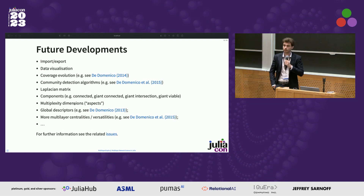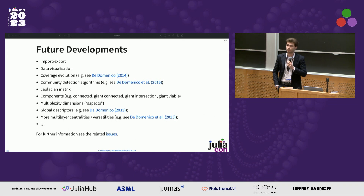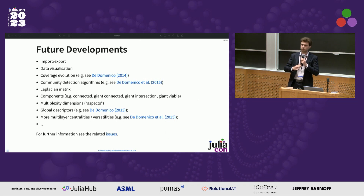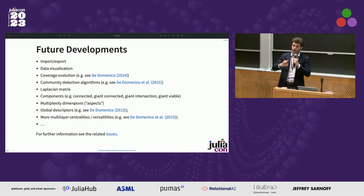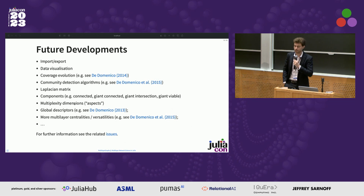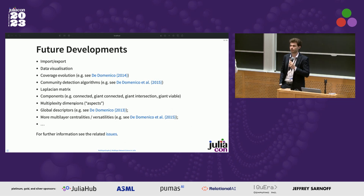Audience question: Can you create a layer from an adjacency matrix directly? Answer: You can give it an edge list — it's a constructor we haven't shown but it's there. Also, you can instantiate the underlying graph yourself and then pass it to the layer or interlayer, and it should work. Thank you.